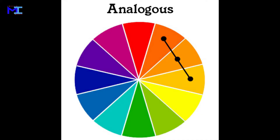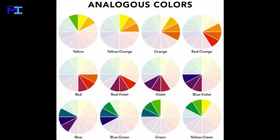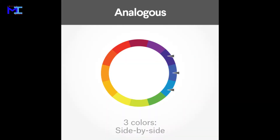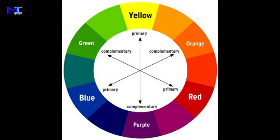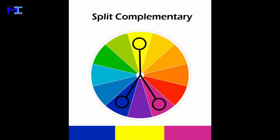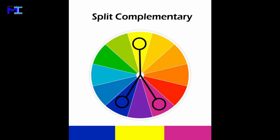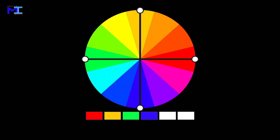Analogous scheme of colors — also called an adjacent color scheme — consists of colors immediately adjacent to each other on the color wheel. Contrasting color schemes are produced by combining colors that are far apart on the color wheel. The contrasting schemes are: complementary, split complementary, triad, and tetrad.